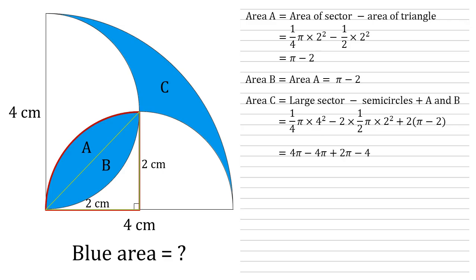Simplifying this, the large sector, quarter times four squared is four. So that's four π. The semicircles, two times a half times two squared is four. So that's minus four π. And expanding the brackets at the end, we've got two π minus four. So simplifying again, four π minus four π cancel each other out. So the area of C is two π minus four.